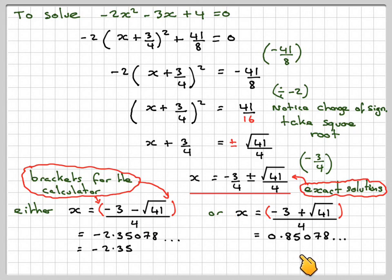So write down the full calculator value, 0.8078, and that gives an answer of 0.85. So x equals minus 2.35, or x equals 0.85. These answers will be given to two decimal places.